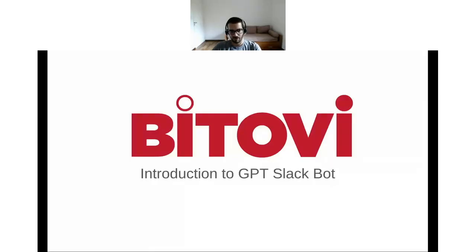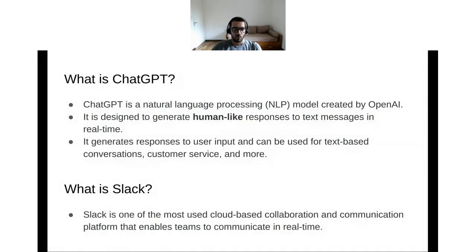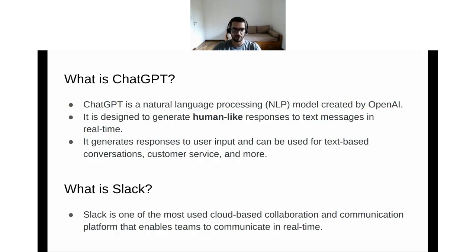I'll start with a quick presentation — an introduction to the GPT Slack bot. So, what is ChatGPT? ChatGPT is a natural language processing model created by OpenAI. It is designed to generate human-like responses to text messages in real time. It generates responses to user input and can be used for text-based conversation, customer service, and more. The human-like factor and the fact that it could learn from input was what drove the rapid adoption of this for day-to-day use.